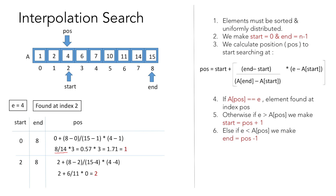When we searched for element 4 using binary search it took 3 steps, while with interpolation search we found element 4 in just 2 steps. This is because binary search always looks at the middle index, while interpolation search starts looking at the index closer to the element we are looking for. If the element is not present in the array, we perform interpolation search while start is less than or equal to end, and the element we are looking for is within the range of elements at the start and end indices.